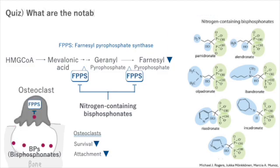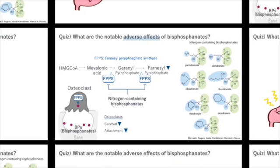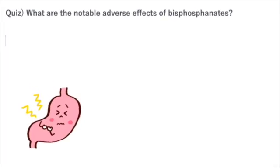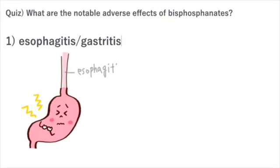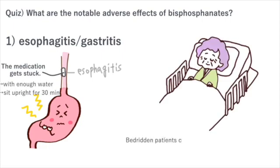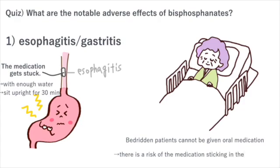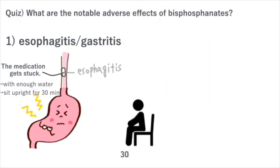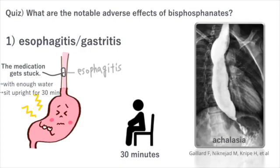What are the notable adverse effects of bisphosphonates? First, all oral bisphosphonates are associated with upper gastrointestinal adverse effects, including esophagitis and gastritis. Clinicians should avoid prescribing oral bisphosphonates to patients at higher risk of these gastrointestinal issues, such as those unable to sit upright for at least 30 minutes after taking the medication and patients with esophageal disorders.